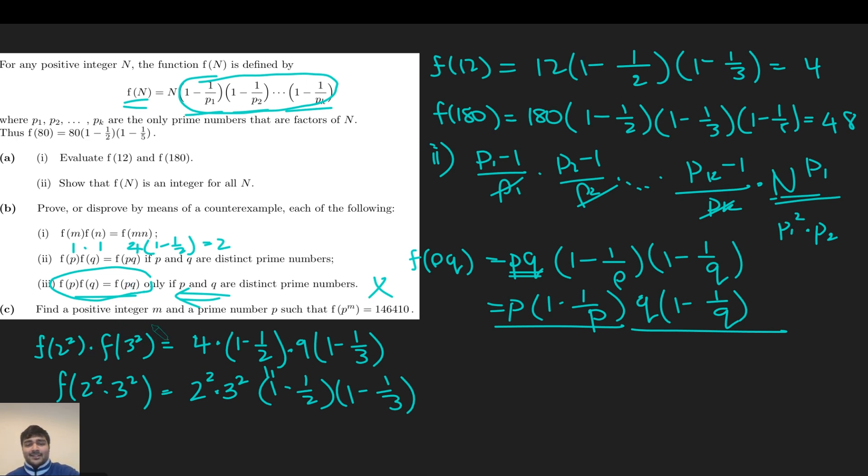Part C: Find a positive integer m and a prime number p such that f(p^m) equals 146,410. This is quite nice. We can kind of just follow our nose here. Let's start from the left side, f(p^m). Well, that's just going to equal p^m times (1 minus 1/p). Clearly, p is the only prime factor in this number. And now if we simplify this, this is just p^(m-1) times (p minus 1). So we need to make this equal to 146,410.